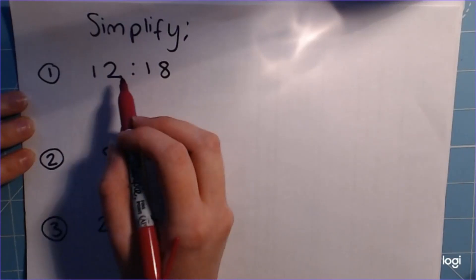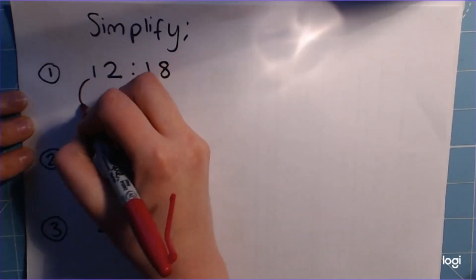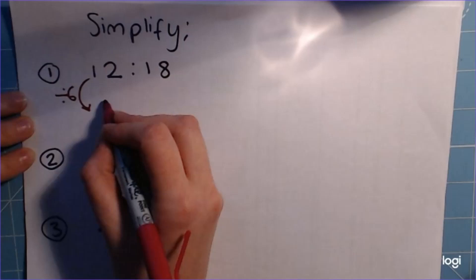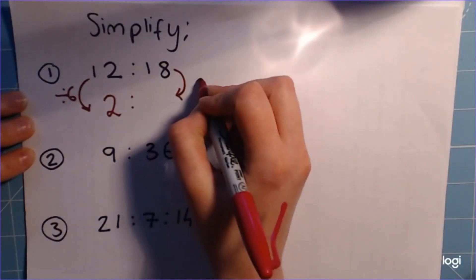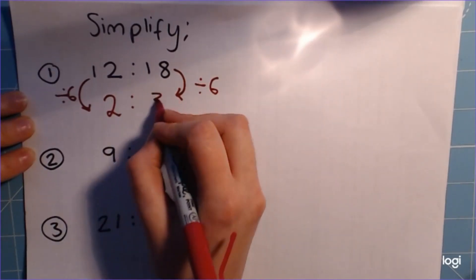So in this case, the highest common factor, the biggest number that goes into 12 and 18 is 6. So I'm going to divide 12 by 6, which gives me 2, and I have to do the exact same thing to the other side. So 18 divided by 6 gives me 3.